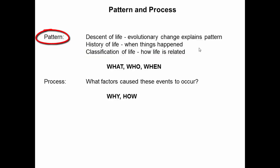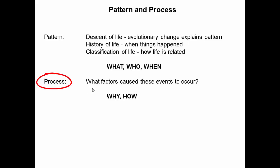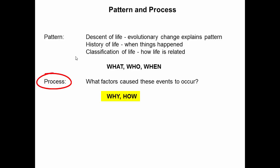We looked at these in the previous part of the course. We can think of this as the what, the who, and the when of the history of life. But what we really didn't talk too much about is what the process was — what factors cause all these events to occur. You can think of that as the why or the how. So in this second part of the course, we'll be looking more at the process or processes that lead to life changing over time, which resulted in the pattern we talked about previously.